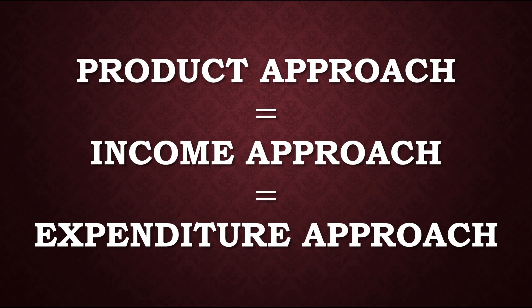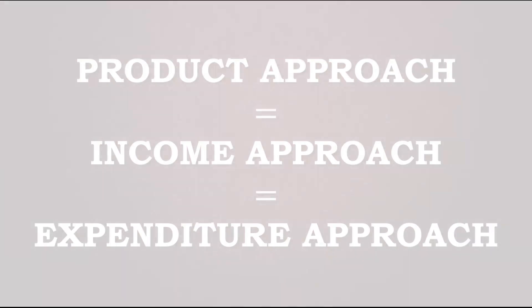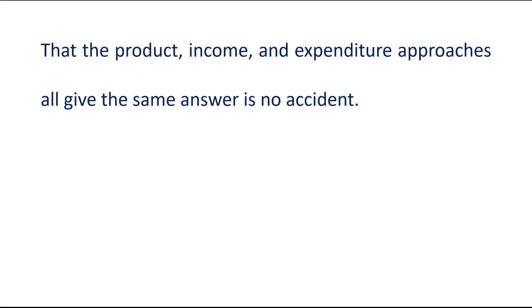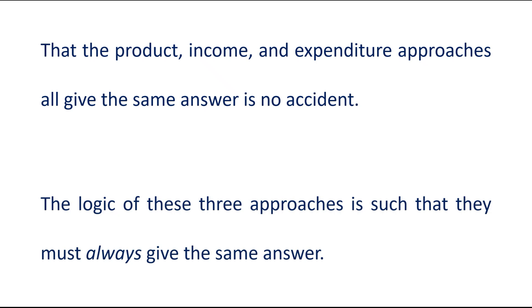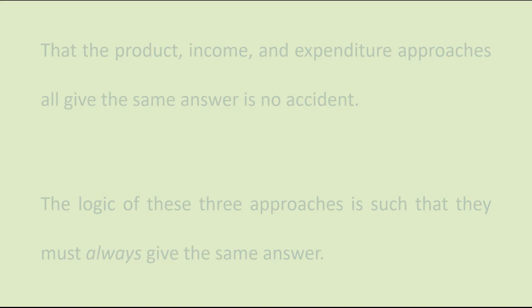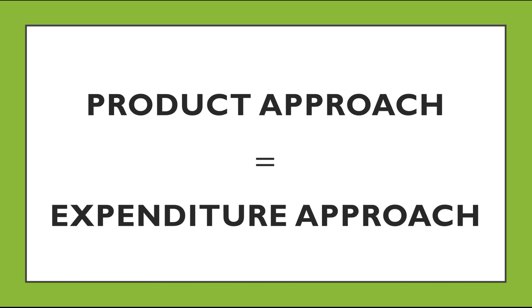Hello students. Today's topic is why the three approaches to measure national income are equivalent. In this video we will learn why the product approach is equal to the income approach is equal to the expenditure approach. That the product, income, and expenditure approaches all give the same answer is no accident. The logic of these three approaches is such that they must always give the same answer.